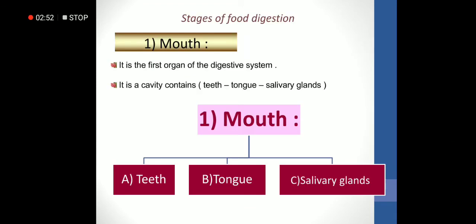We will start with the digestive canal. The first organ in the digestive canal is the mouth. It is a cavity that contains teeth, tongue, and salivary glands. The digestion of food starts in the mouth.